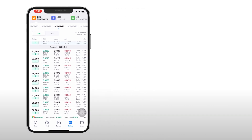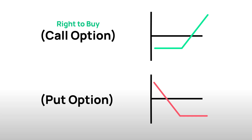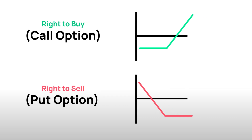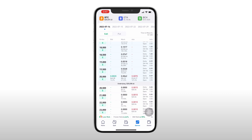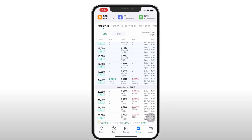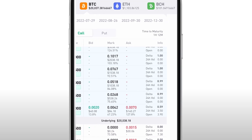You can either select a call option or a put option. The right to buy is known as a call option, while the right to sell is known as a put option. If you estimate the BTC price will increase at the end of the month, you should select a call option.